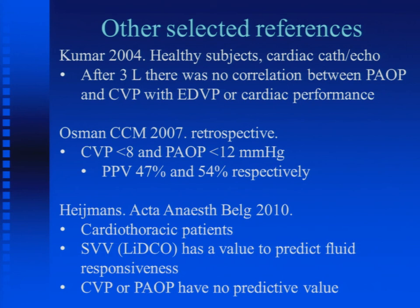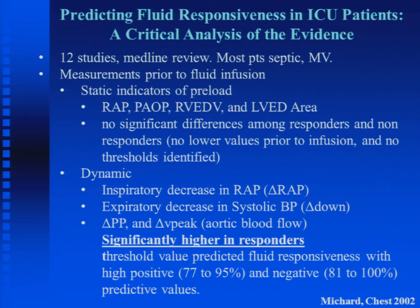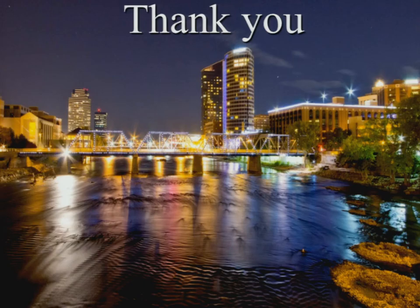Among cardiothoracic patients, stroke volume variation has more of a role than CVP and pulmonary artery occlusion pressures. A meta-analysis confirms: static indices of preload are not good predictors. Dynamic measures — pulse pressure variation, changes in aortic velocity flow, and dynamic changes with mechanical ventilation — will help you not harm patients. Start looking at what you have available and put these tools to good use. Thank you very much.